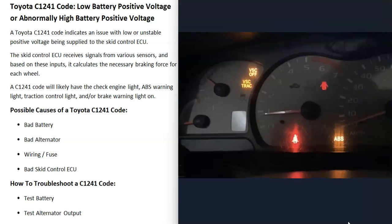When you get this code, very likely you're going to have a lot of lights on your dashboard — ABS lights, traction control lights, things like this. That's very common.